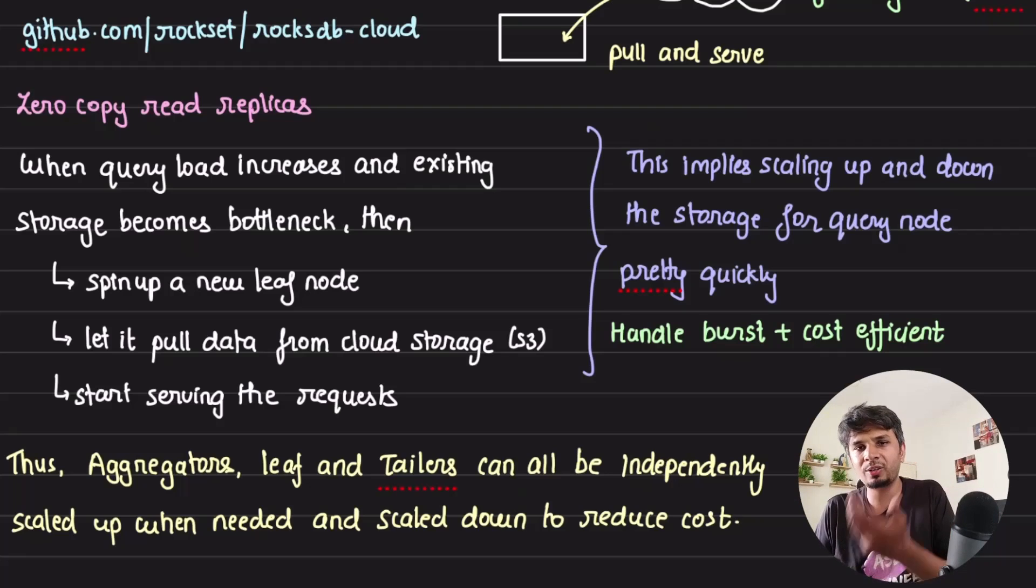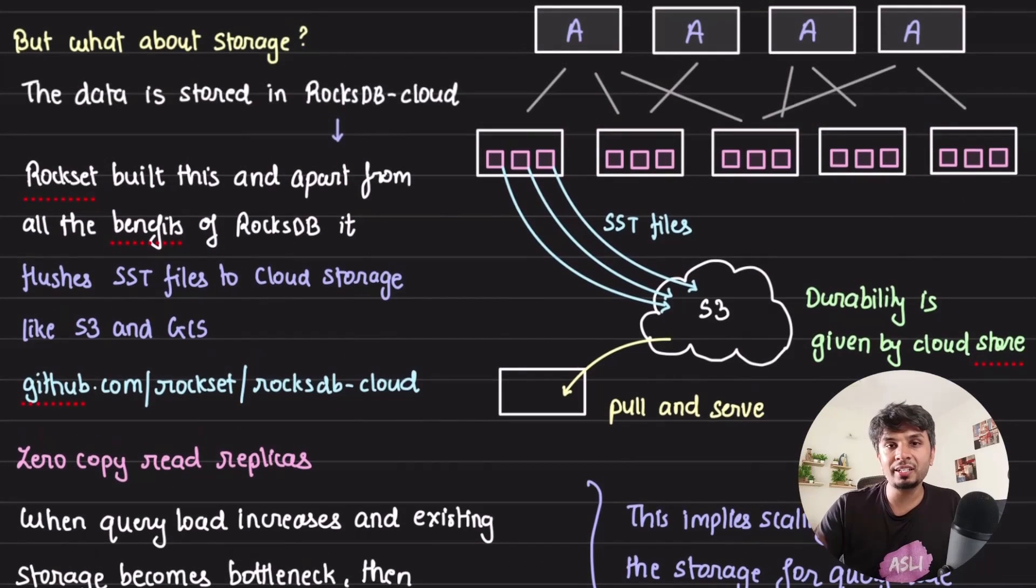And this is how Rockset is actually a truly horizontally scalable database in the cloud that offers very low latency queries on top of data. Pretty interesting stuff. By the way, I would highly recommend if you're interested, their codebase on RocksDB cloud is open source - you can find it on github.com/rockset/rocksdb-cloud.